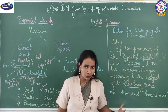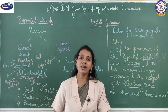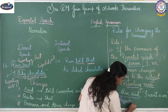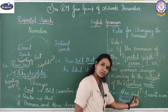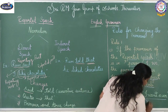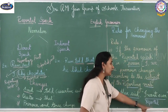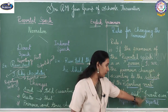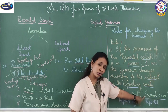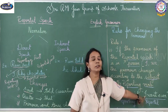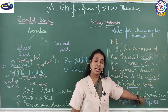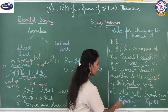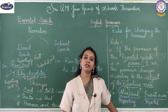Now let us identify the reporting part and reported part. 'Alex said' is the reporting part and the corresponding verb is the reporting verb. 'I want a car' is the reported part and the verb corresponding to this part is the reported verb. The pronoun 'I' in the reported part is in the first person. So it will change according to the subject of the reporting part. Alex is the subject of the reporting part.